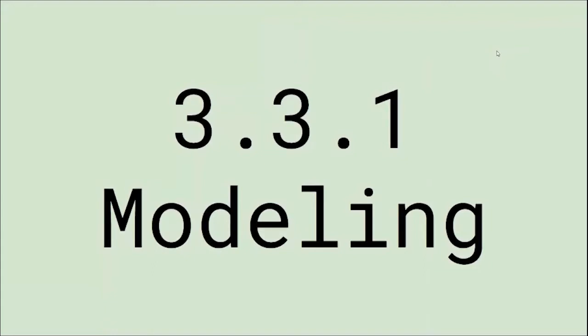So 3-3-1 is all about modeling. Modeling just means you're supposed to represent some real-world phenomenon using something else, whether it's a math equation, or like a model car that represents a real car, or a model home that represents an actual real-life home. That's what this means by modeling.